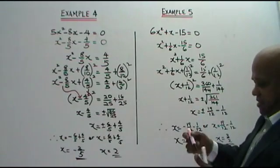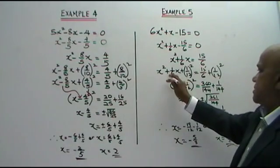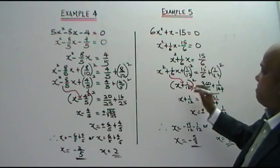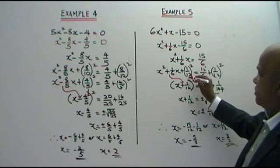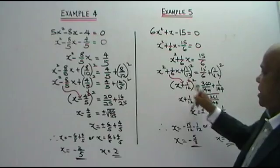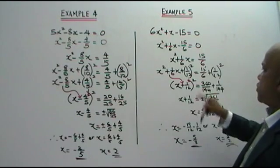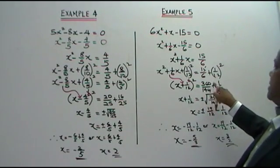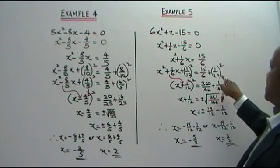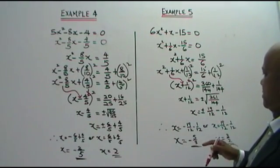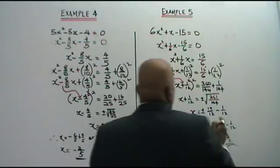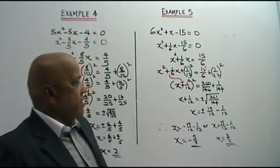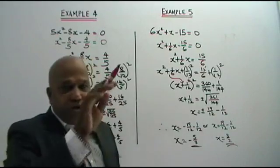The sign here is plus, so this sign comes here — plus — into this bracket. So x plus 1 over 12. This is 1 over 12, we bring it down. So x plus 1 over 12 squared equals to this. This is simplified — we get 360 over 144 plus 1 over 144. So from here, you get x plus 1 over 12 equals to 361 over 144, square root.